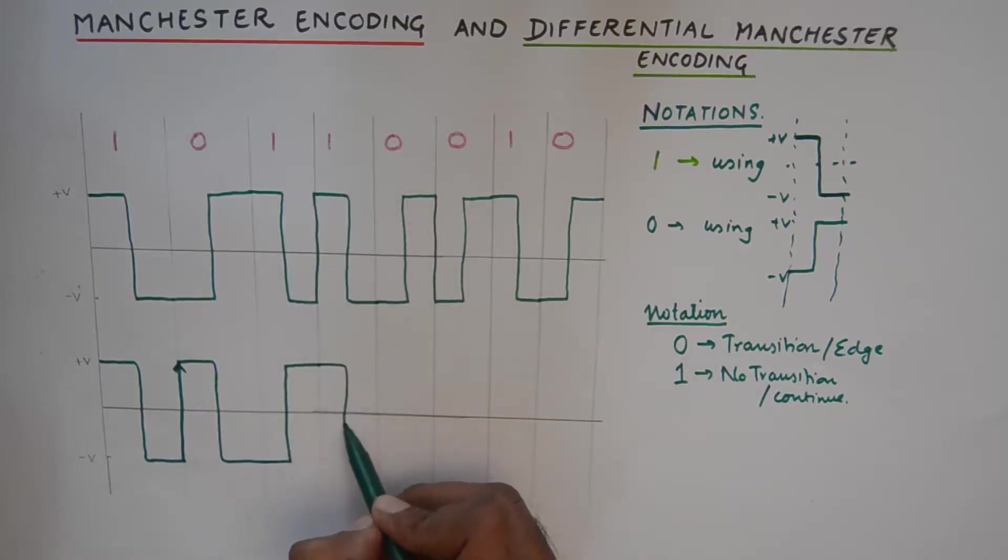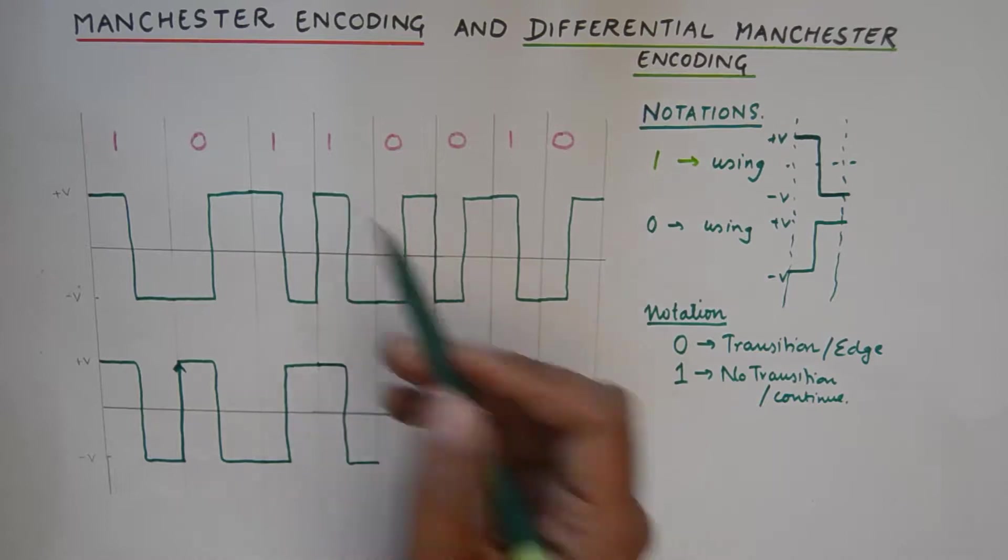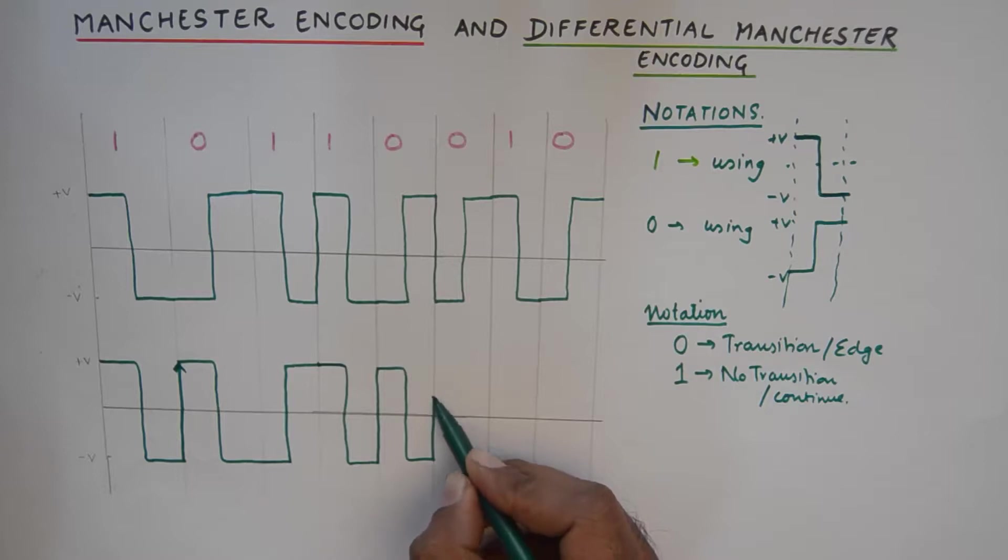But this is a mere coincidence because we've just continued from the previous one at plus V. And a zero will give us an abrupt transition, so this will be zero. And again a zero will give us an abrupt transition, so again a zero. And one will continue as it is, and a zero now gives me an abrupt transition from here.